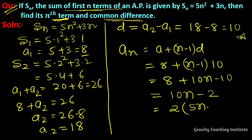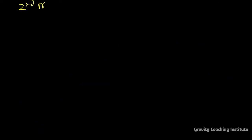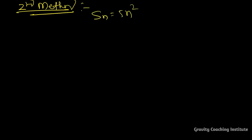Now we will solve using the second method. Sn is 5n squared plus 3n. We replace n with n minus 1.